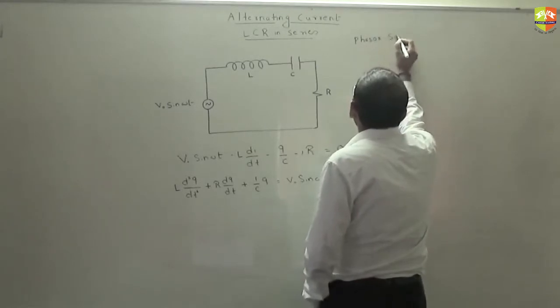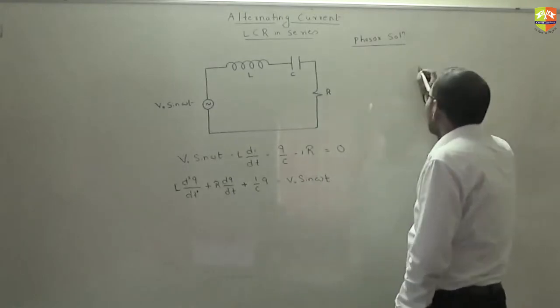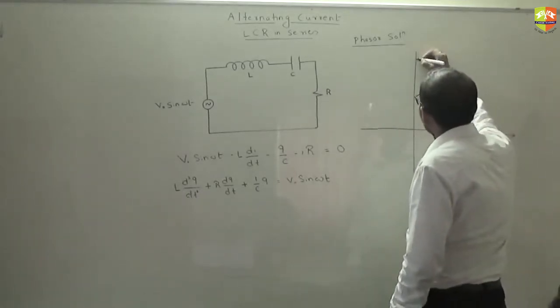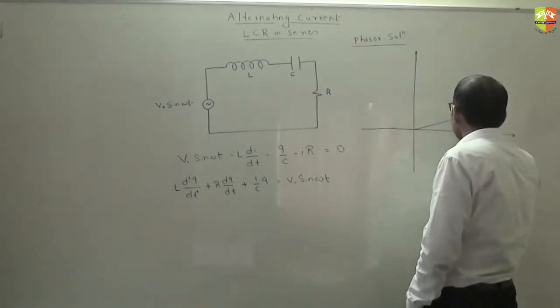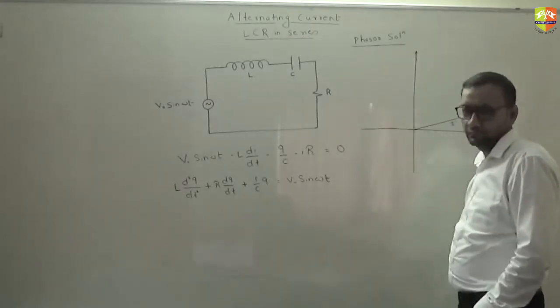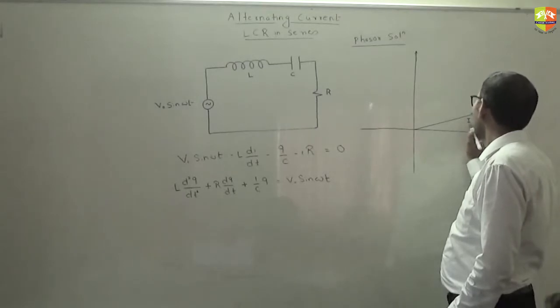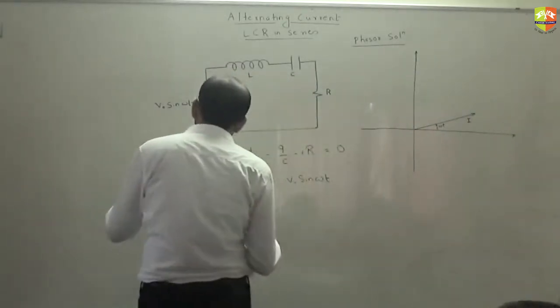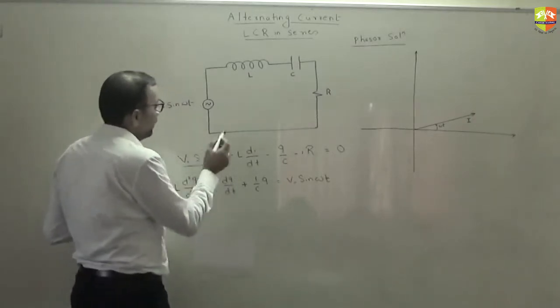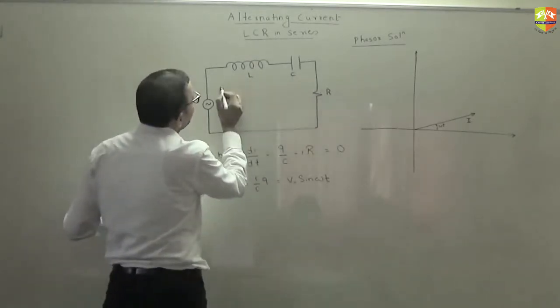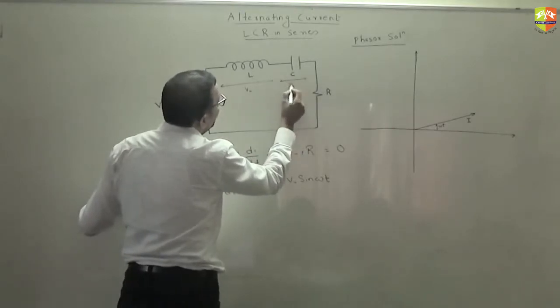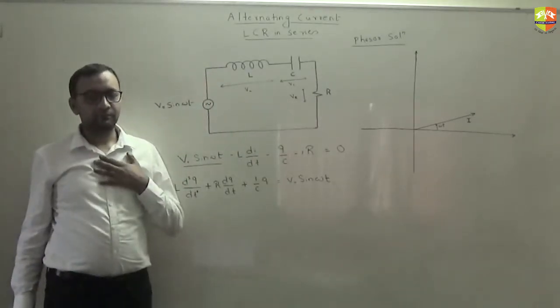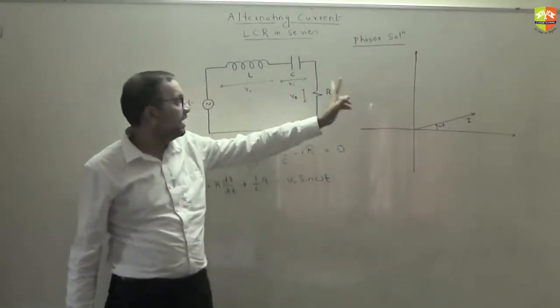If I say that this is the phasor for current, if this is the phasor for current, this angle will be omega t. Now you have to understand here that voltage of the source is sum of voltage of inductor, capacitor, and resistance. So this is VL, this is VC, and this is VR. But then you cannot add them like numbers. They are vectors or phasors. So can you represent VR, VC, and VL out here?